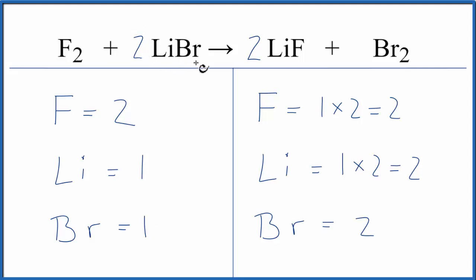That means we have two times everything, so one Li times the two, that'll equal two Li's, and one Br times the two, that equals two Br's.